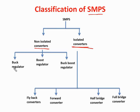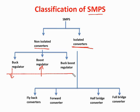Non-isolated type converters include: the buck regulator, which is used to step down the voltage; the boost regulator, which is used to step up the voltage; and the buck-boost regulator, which can step up and step down. All three are non-isolated converters — the output is not isolated from the input. Isolated converters are classified into four categories, the first being the half-bridge converter.